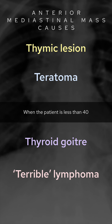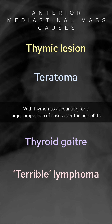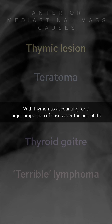When the patient is less than 40, germ cell tumors and lymphoma account for a large proportion of cases, with thymomas accounting for a larger proportion of cases over the age of 40.